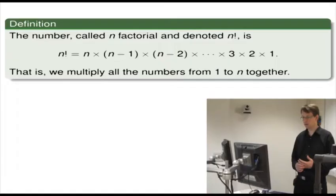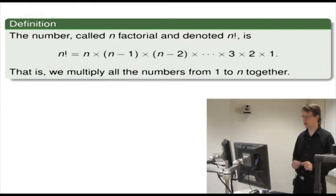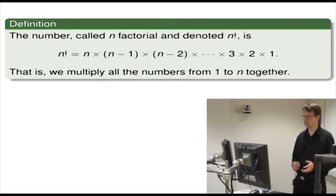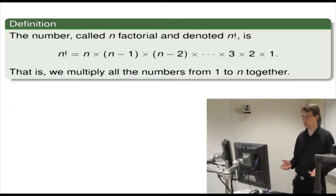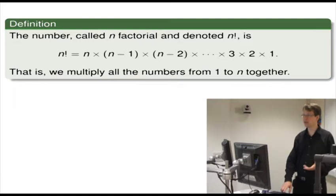Let's define factorial. The number called n factorial, denoted n exclamation mark, is n factorial equals n times n minus 1 times n minus 2, all the way down to 3 times 2 times 1. That is, we multiply all the numbers from 1 to n together.